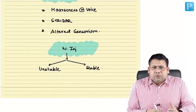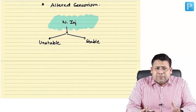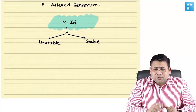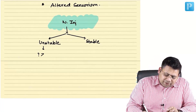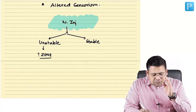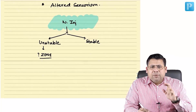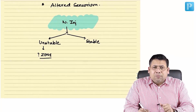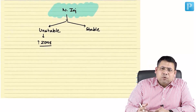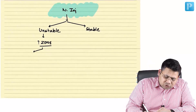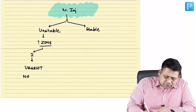Before going for surgery, zone matters. A single incision gets you into the neck for Zone 2, but Zone 1 and Zone 3 require bony resection — mandibleotomy or sternotomy — which is time-consuming and you might lose the patient. So the zone-wise approach is critical: if it is Zone 2, go for urgent neck exploration.